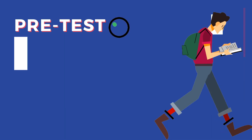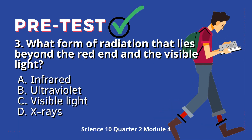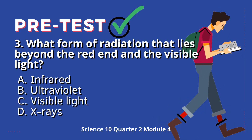Question 3: What form of radiation lies beyond the red end of the visible light? A. Infrared. B. Ultraviolet. C. Visible light. D. X-rays.